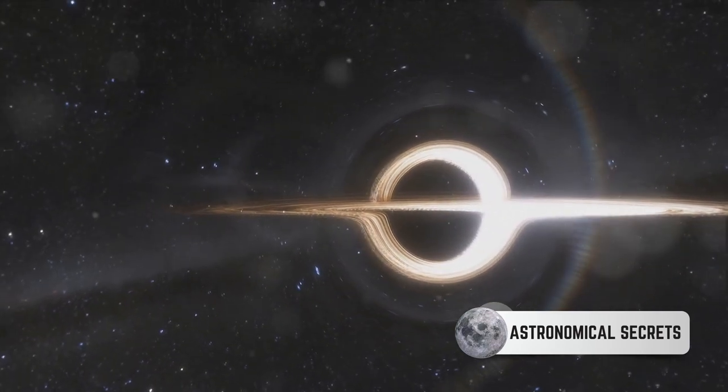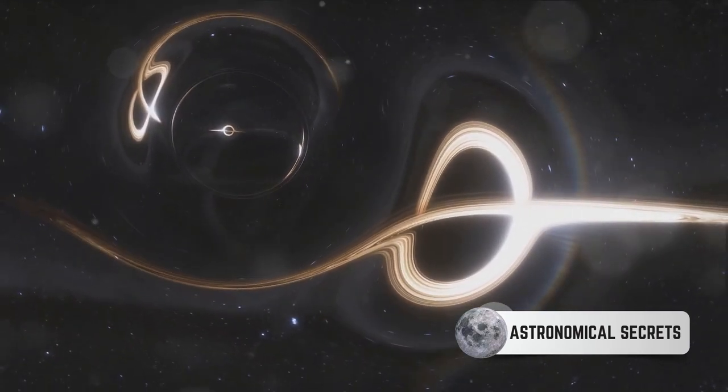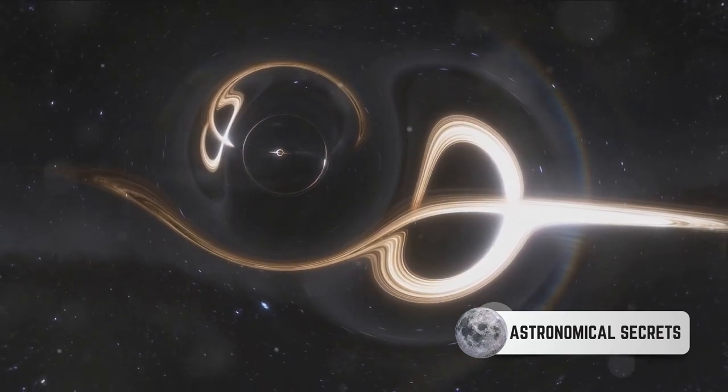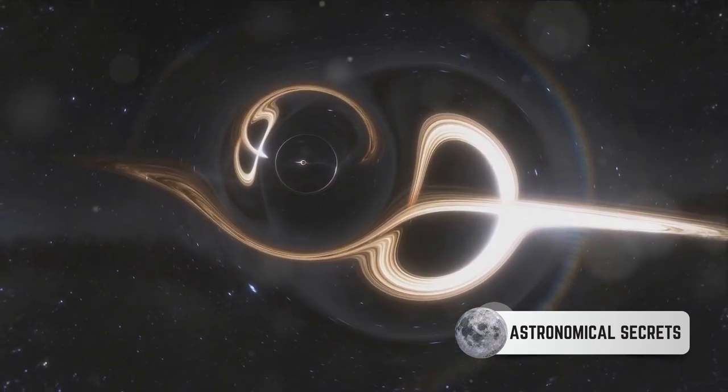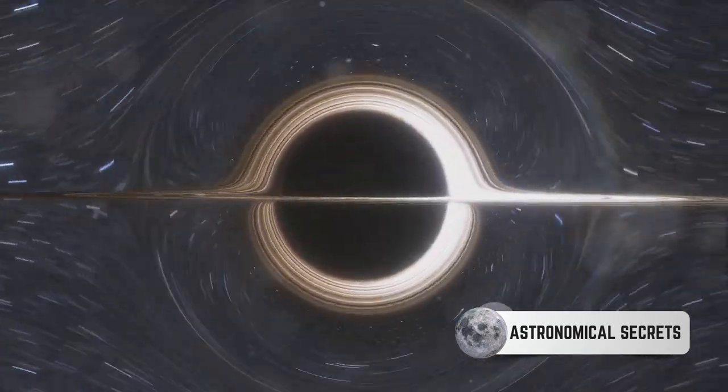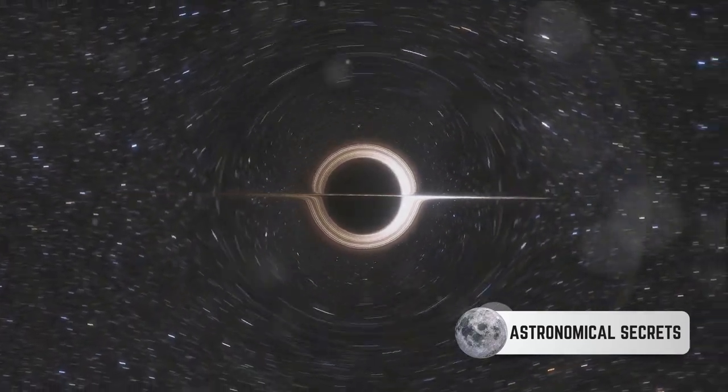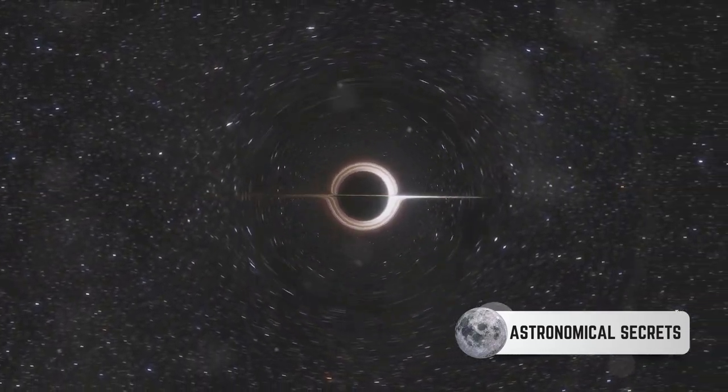Gravitational lensing is another tool in our cosmic detective kit. This phenomenon occurs when the gravity of a massive object, like a black hole, bends the path of light around it. It's as if the black hole is wearing a pair of glasses. By observing these light distortions, we can glean information about the black hole and by extension, the accretion disk.